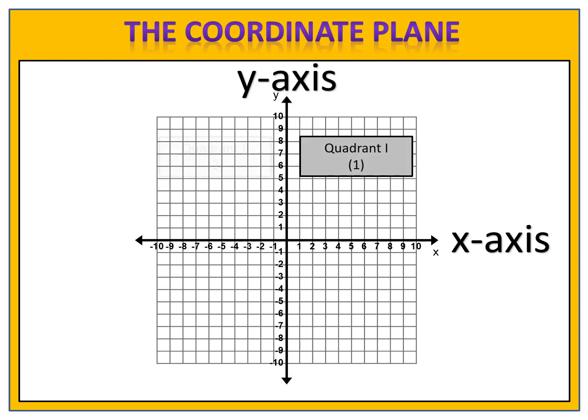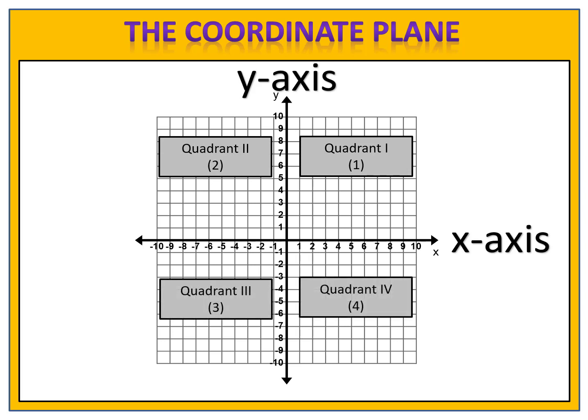The first quadrant, the second quadrant, the third quadrant, and the fourth quadrant. These are typically written with Roman numerals i, ii, iii, and iv, but we have numbers for them in our system: one, two, three, and four. To remember the order in which these are arranged, think of the letter C. We start with quadrant one and we move around the letter C to quadrant four.